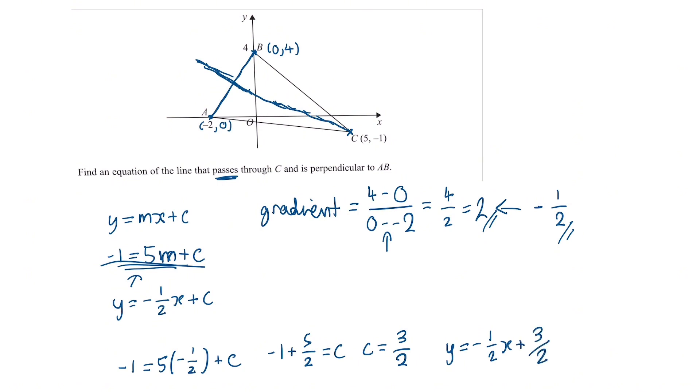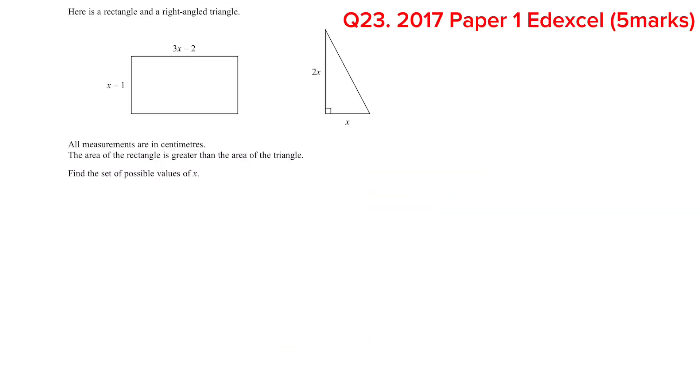Therefore our final equation of the line is y equals minus a half x plus 3 over 2. And that's the end of this question. Let's move on to the next one. Here's the final question that we'll go through.